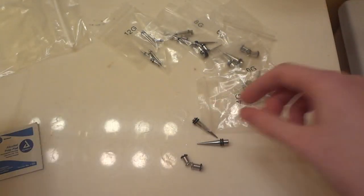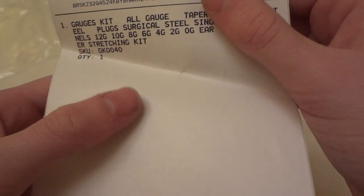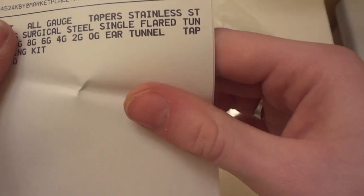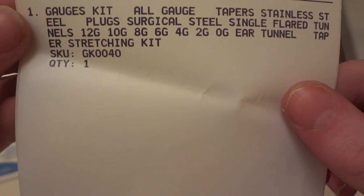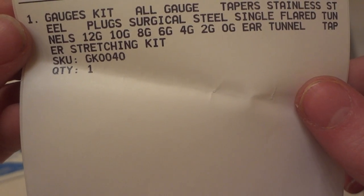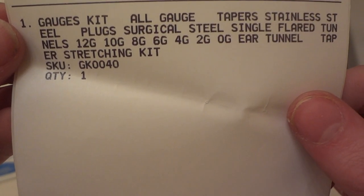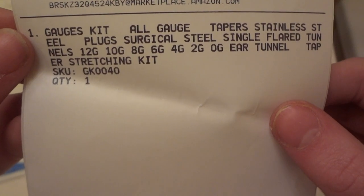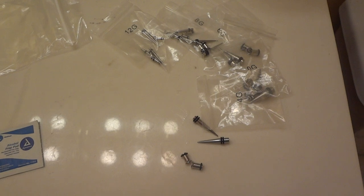Once again, their name is body J4U and they're located in Miami. You can find them on Amazon. This is the name of the set I ordered: gauge kit all gauge taper stainless steel. Thank you so much for watching and I will see you guys soon. Bye.